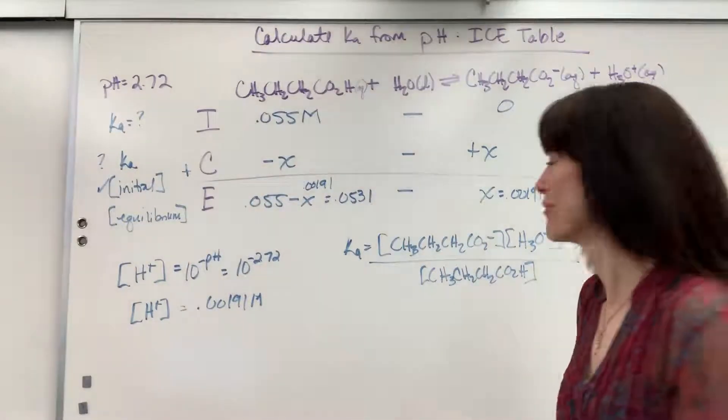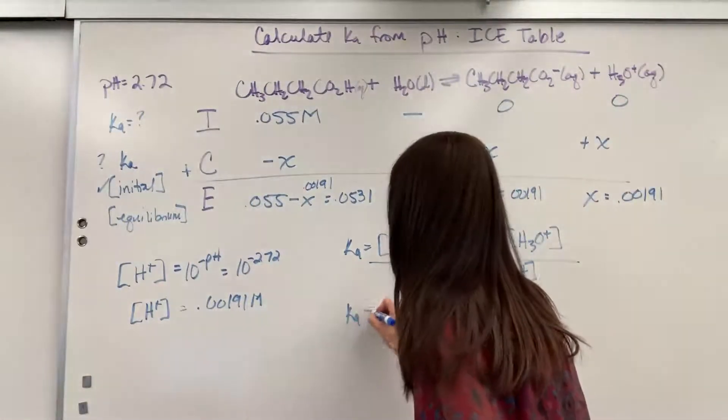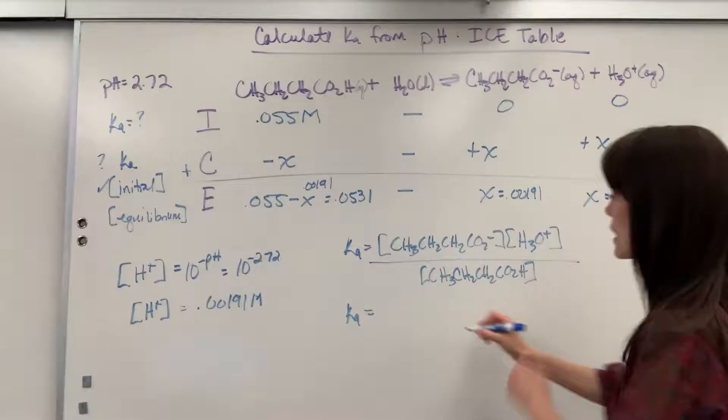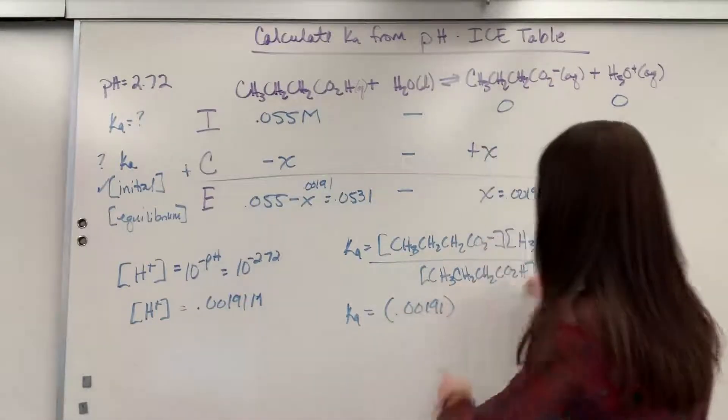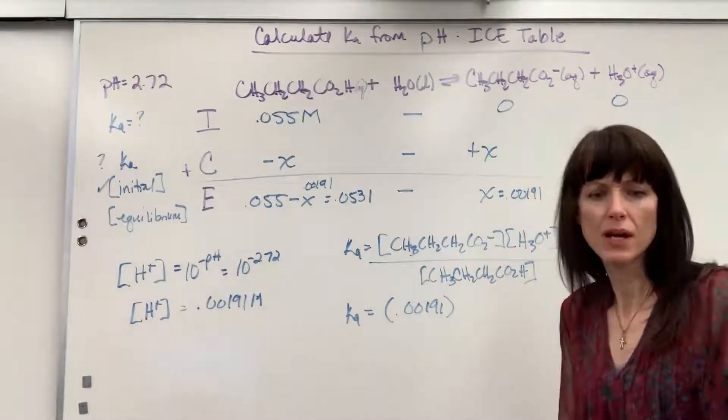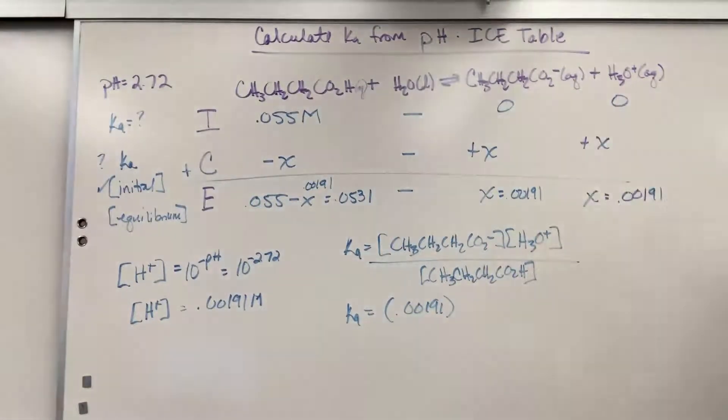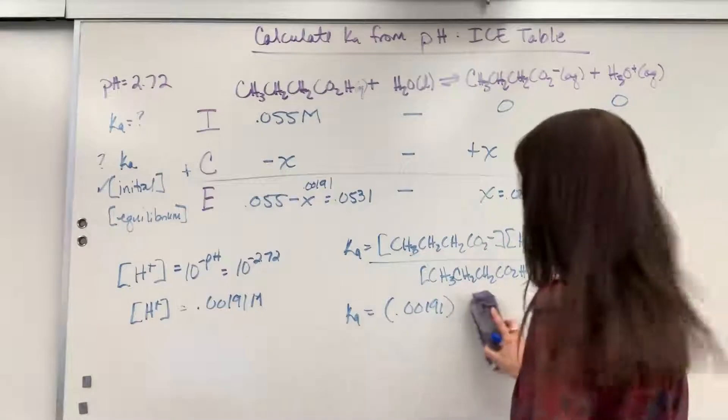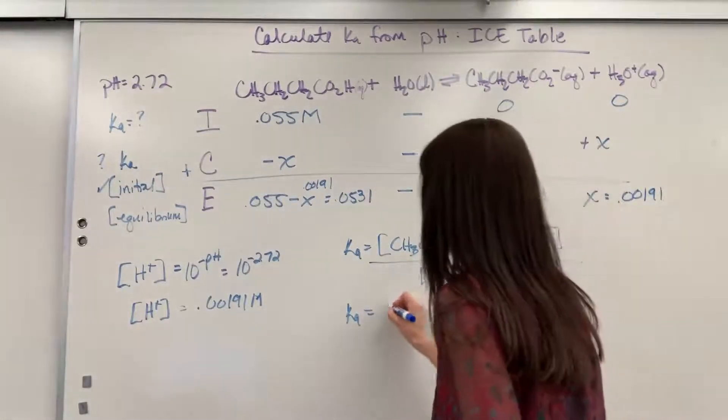We're going to go ahead and substitute values in. Ka will equal we're going to have 0.00191. And they're the same. So I could do that as, actually, you know what? I'm going to show you this explicitly. Because this, by chance, might be the first time you're seeing it.